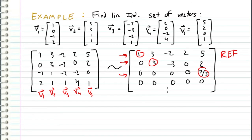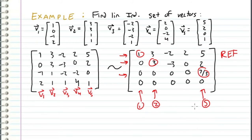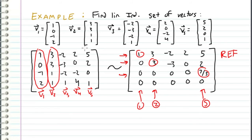So these are pivots, where the corresponding columns are columns 1, 2, and 5. So this means that the first, second, and fifth vectors of our original matrix are linearly independent. The first, second, and fifth vectors are the linearly independent set.